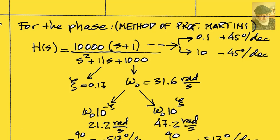The zero at one introduces two corners. One at 0.1 that adds a slope of 45 degrees per decade, and one at 10 that adds a slope of negative 45 degrees per decade.